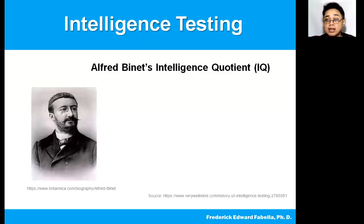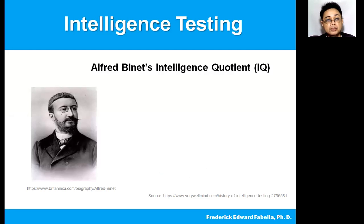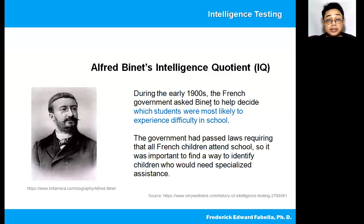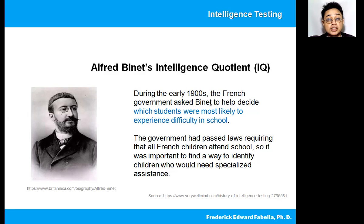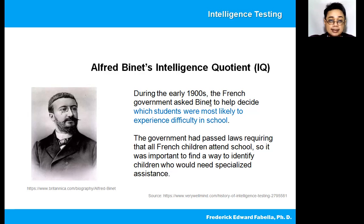So let us begin. It was Alfred Binet who coined the term intelligence quotient, or IQ. During the early 1900s, the French government asked Binet to help decide which students were most likely to experience difficulty in school. The government had passed laws requiring that all French children attend school, so it was important to find a way to identify children who would need specialized assistance.